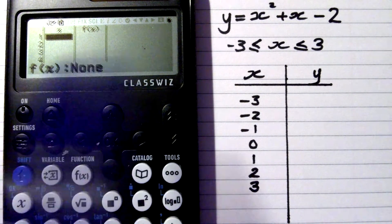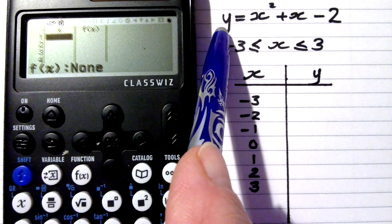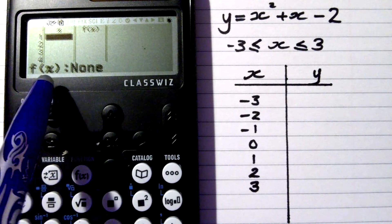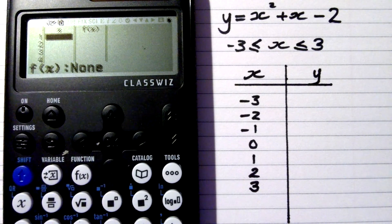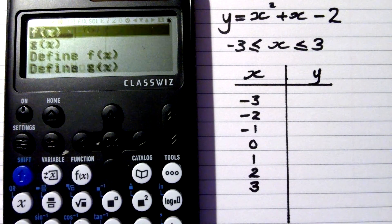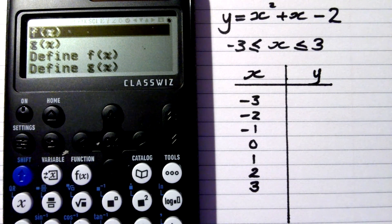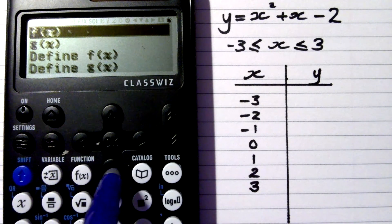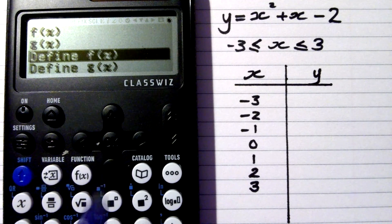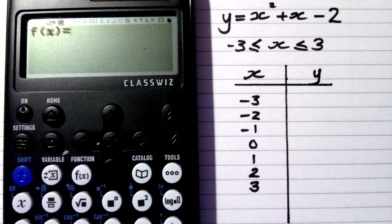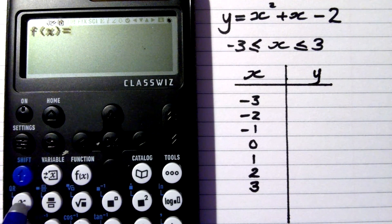It's prompting me for f of x — that's just a fancy way of saying y. So we need to define y, f of x. We do that by pressing the function button. It asks us for f of x and g of x, so I can have two functions on this. I need to define f of x and press exe.